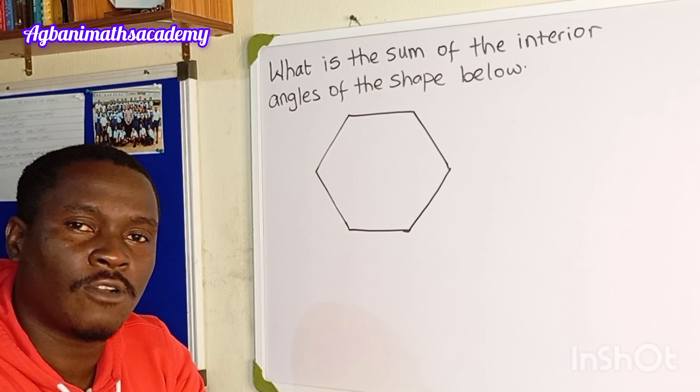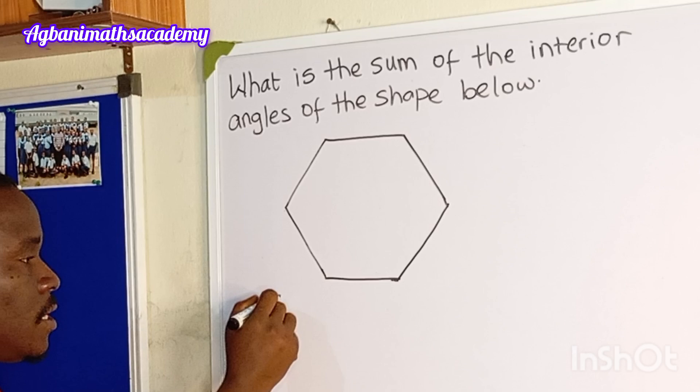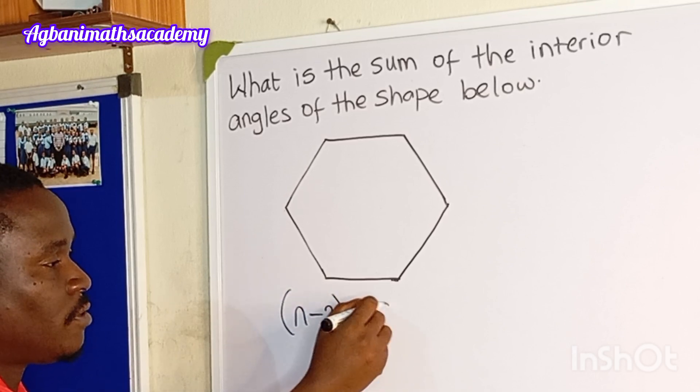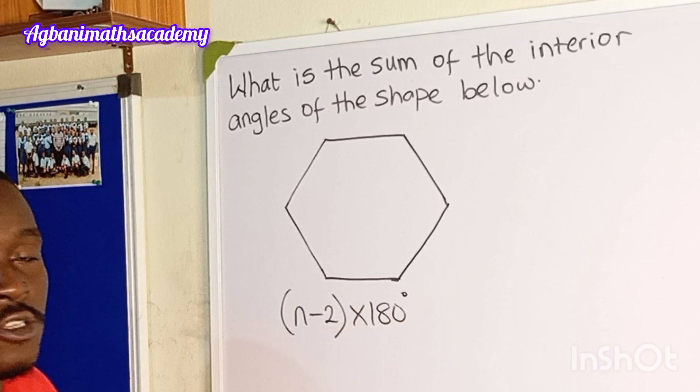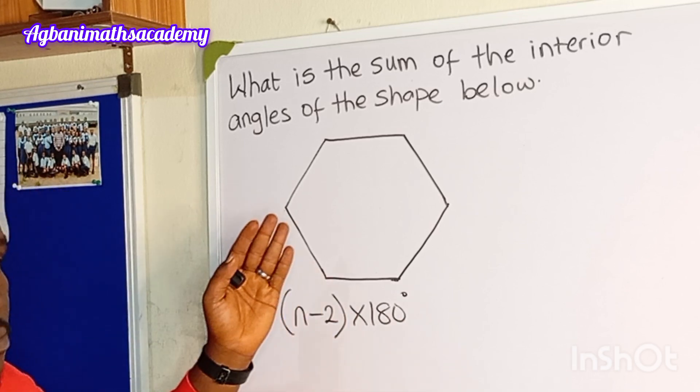So how do you calculate the sum of angles in a polygon? The formula is n minus 2 times 180 degrees. So what is n? n is the number of sides of the polygon.